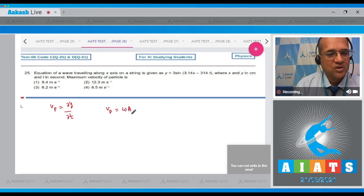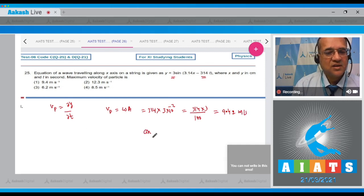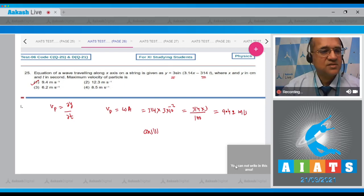And what is this omega? Omega is 314. And what is a? a is 3 centimeters, so write in meters - so 314 times 3 divided by 100 - and that comes to be 9.42 meters per second. Therefore the correct option is the first option: 9.4 meters per second.